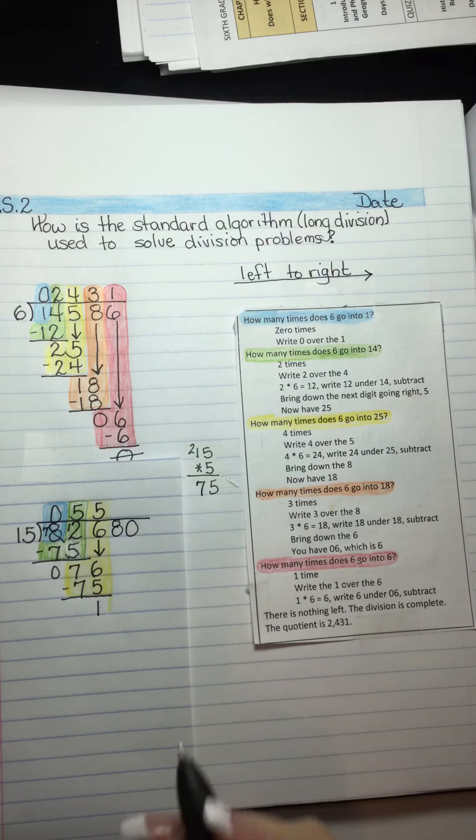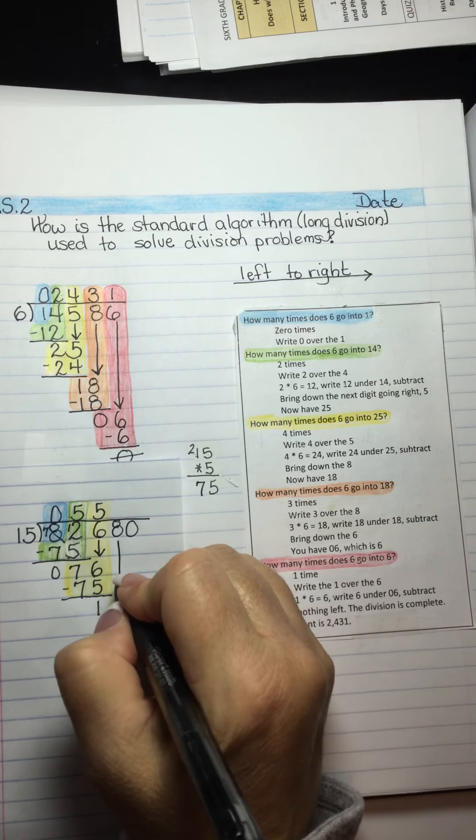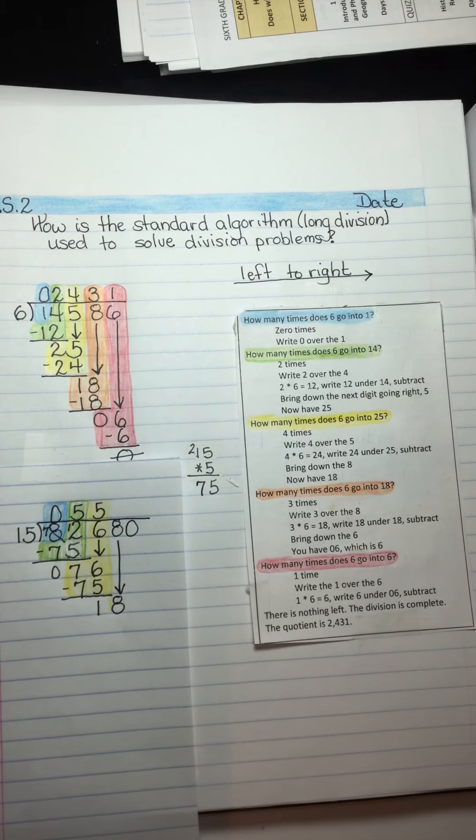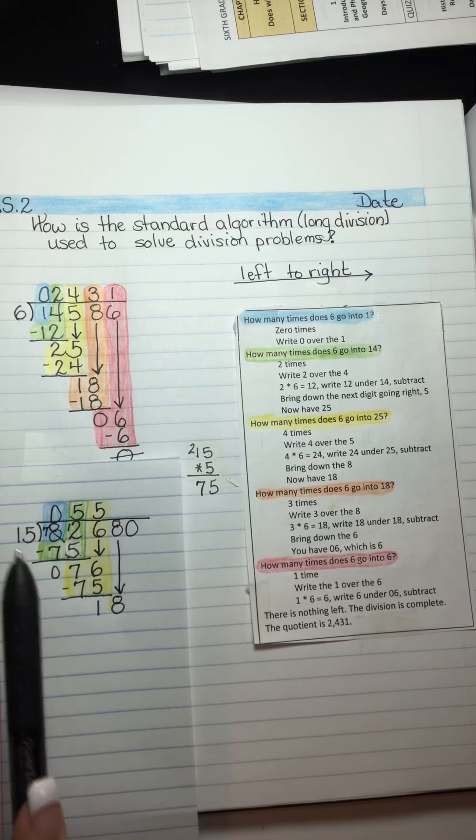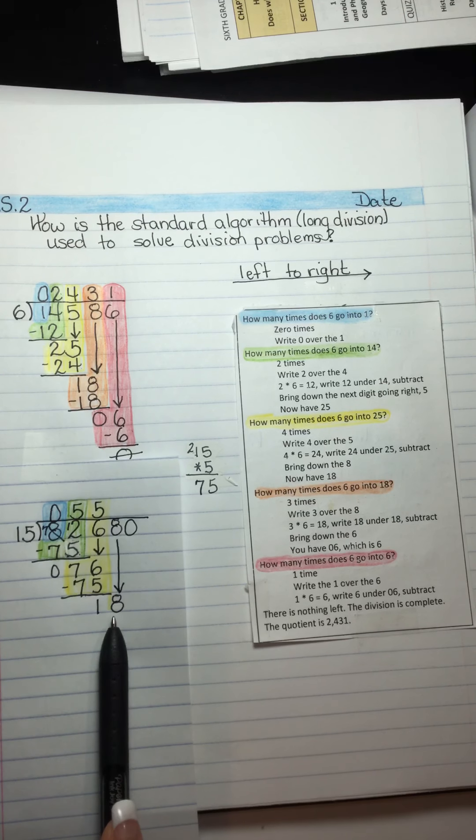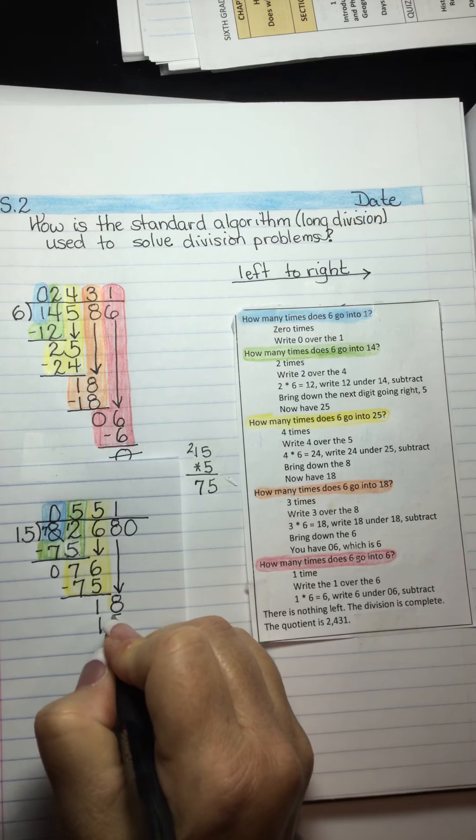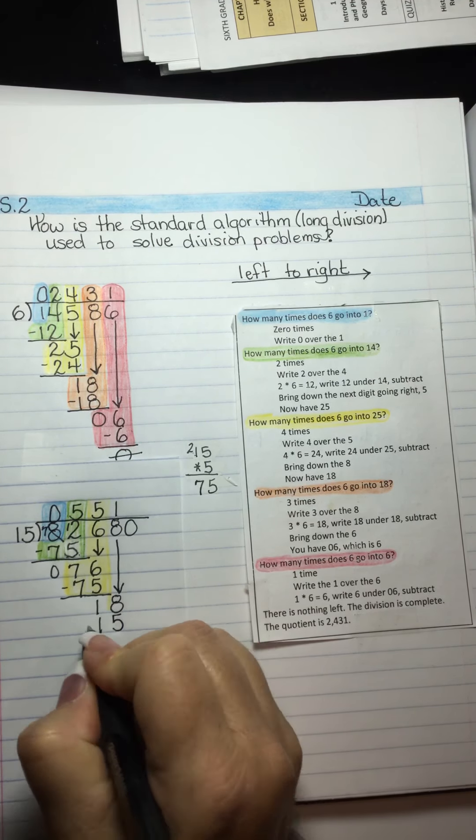And now I'm going to bring down the next digit, which is the 8. And I'm going to have 18 to think about. And I'm going to think, how many times does 15 go into 18 without going over? We don't want anything larger. And that would be 1. 1 times 15 is 15. 18 minus 15 is 3.